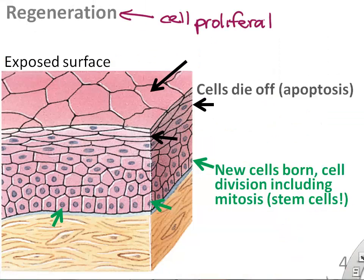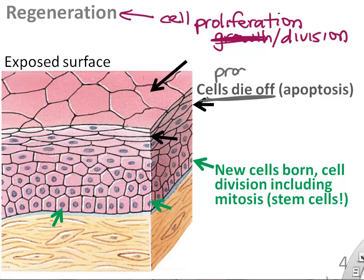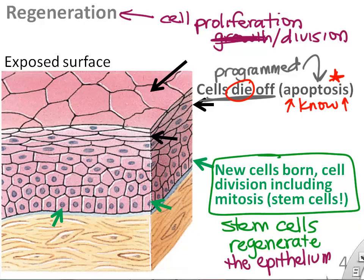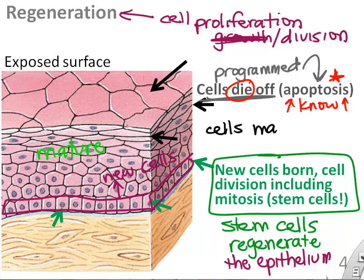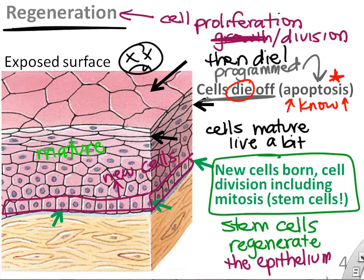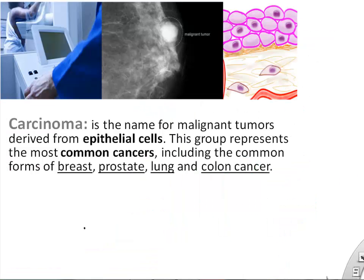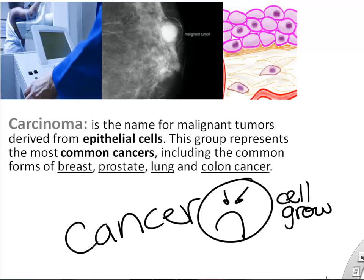Because epithelia constantly need to regenerate, they're always growing and dividing — cell proliferation or regeneration. The apical cells will die off through apoptosis, which is programmed cell death. So we need a layer of stem cells to help regrow our epithelium. Your skin and stomach lining regrow really fast: stem cells make new cells, those new cells mature, live for a while, and then die via apoptosis.